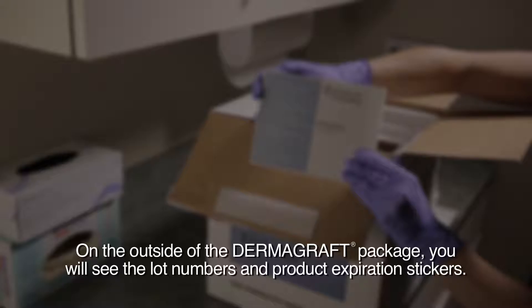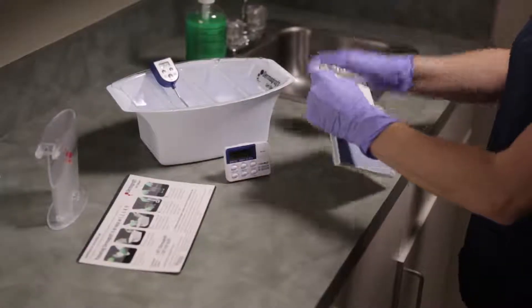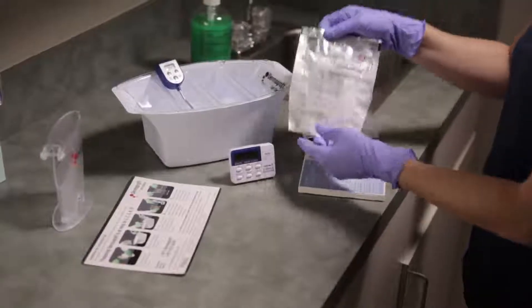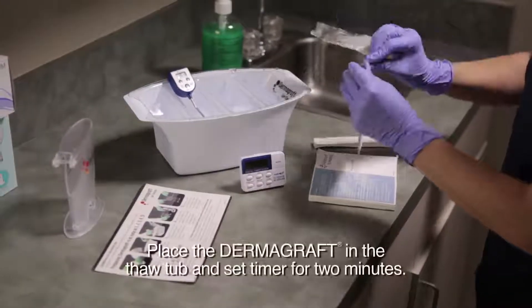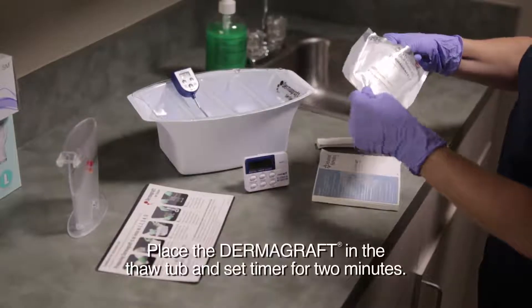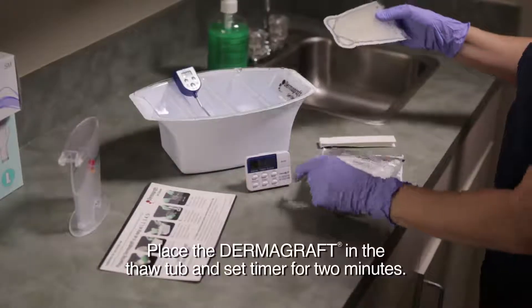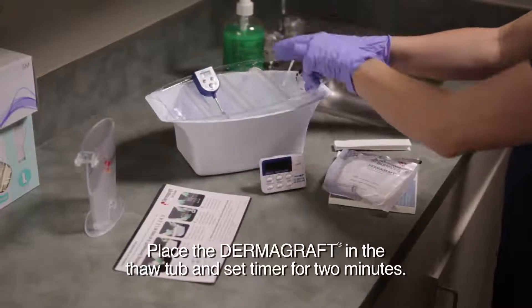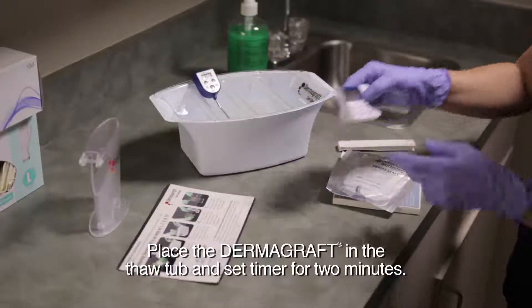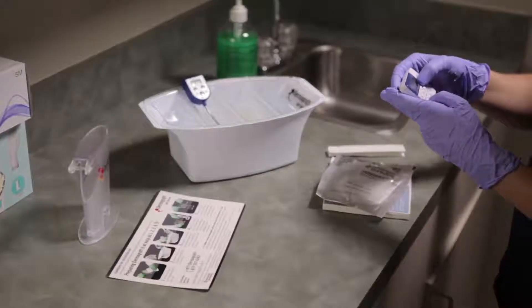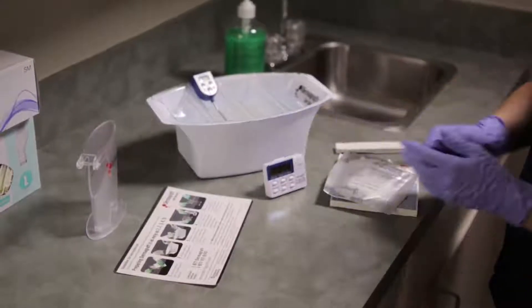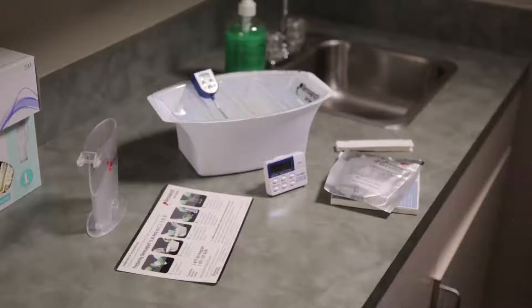Note that on the outside of the Dermagraft package, you will see the lot numbers and product expiration stickers. These should be placed in the patient chart or any other tracking tool preferred. The foil pouch should not be cut open but rather torn to remove the actual Dermagraft. Place the Dermagraft in the thaw tub and set the timer for two minutes. Only a single piece of Dermagraft should be thawed at a time. During the countdown, ensure you have normal saline at room temperature and a sterile pair of scissors ready for the next steps.